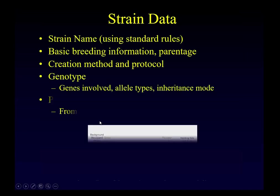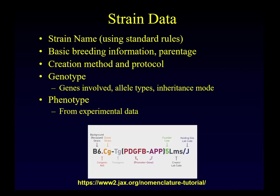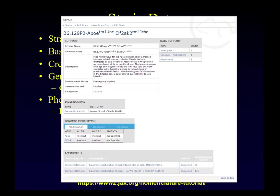Because clients don't always use standard laboratory strains — many are strains created in their own laboratories — we incorporate strain information into the system using international nomenclature rules. We capture basic breeding information, parentage, how the strain was created, and any allelic or genomic alterations. The phenotype for each strain is derived from the uploaded data. Each strain has an official name, common name, description, investigator, and genomic information with hyperlinks to NCBI Entrez Gene IDs.